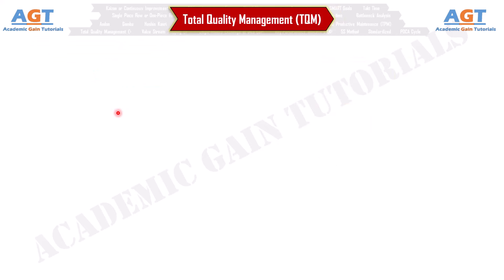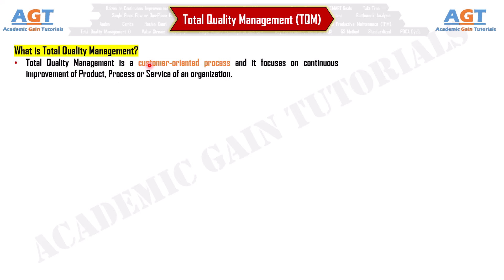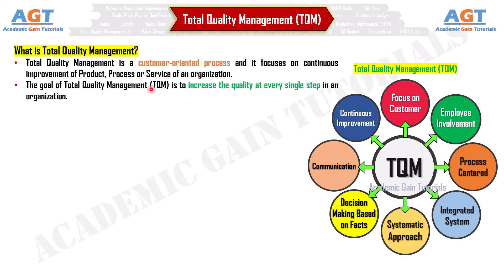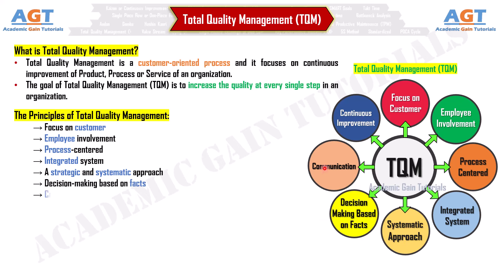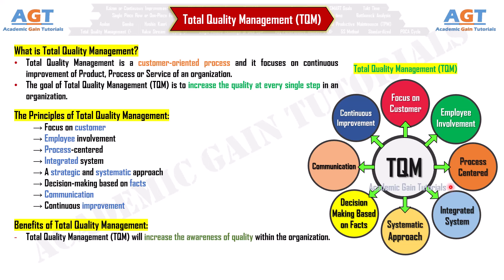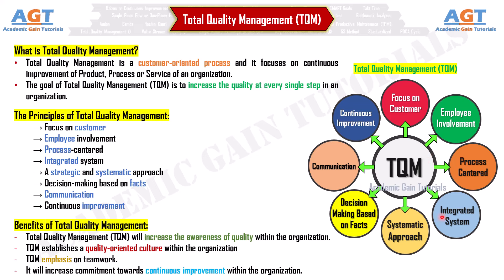Number 20: Total Quality Management (TQM). TQM is a customer-oriented process focused on continuous improvement of product, process, or service of an organization. The goal of TQM is to increase quality at every single step in an organization. The principles of TQM are: focus on customer, employee involvement, process-centered, integrated system, a strategic and systematic approach, decision-making based on facts, communication, and continuous improvement. Benefits: TQM increases awareness of quality, establishes a quality-oriented culture, emphasizes teamwork, and increases commitment towards continuous improvement within the organization.